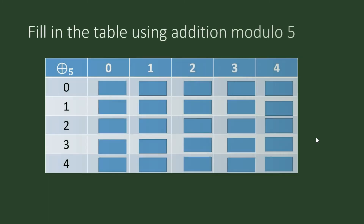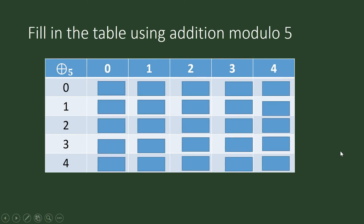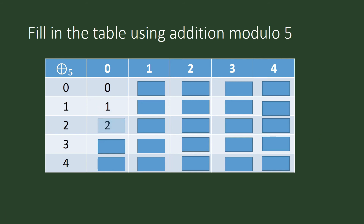Fill in the table using addition modulo 5. The rows and columns are labeled 0, 1, 2, 3, 4. For example, 0 plus 0 is 0, which is congruent to 0 under addition modulo 5. And 0 plus 1 is congruent to 1 modulo 5. You can look at the entries inside the table as the remainders when you divide the sum under addition modulo 5.